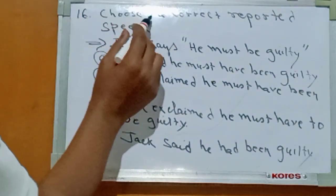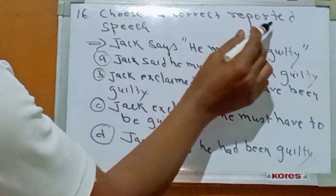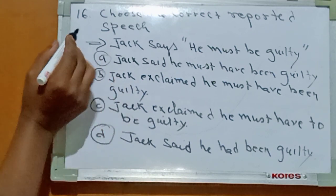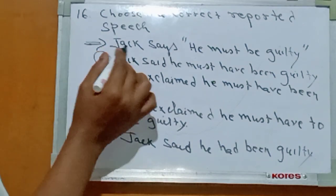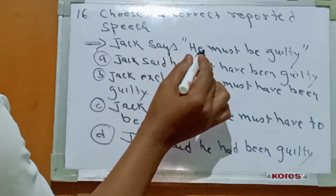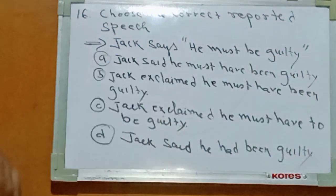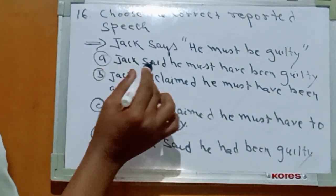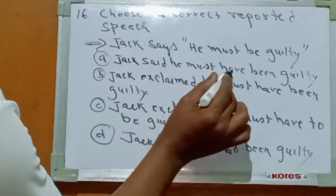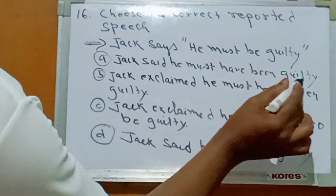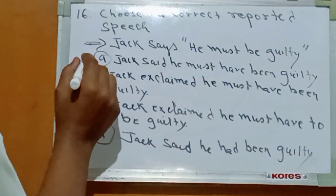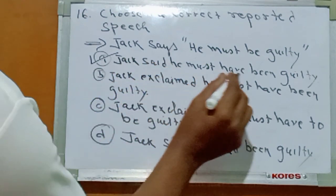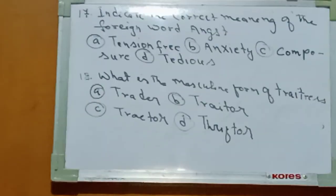Number sixteen: choose the correct reported speech. The sentence is: Jack says he must be guilty. The right answer is Option A: Jack said he must have been guilty.